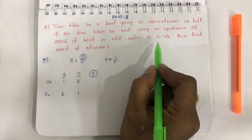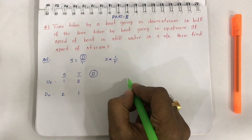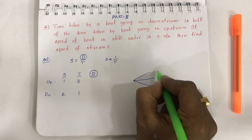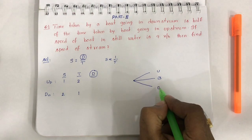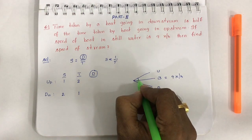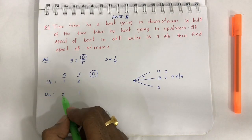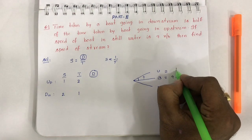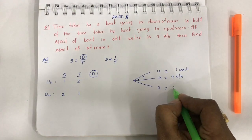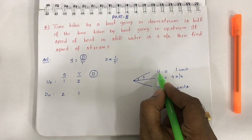Downstream is one unit, upstream is two units. Speed is inversely proportional to time. So if the time ratio is 2:1, then the speed ratio is 1:2. The speed of the boat in still water is 9 kilometers. Speed of the stream, we need to find. Let's draw our picture.